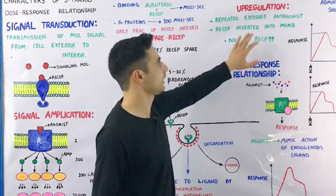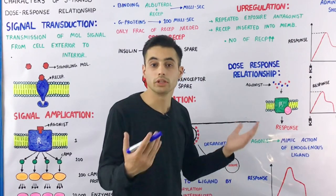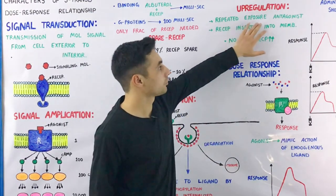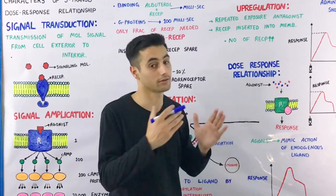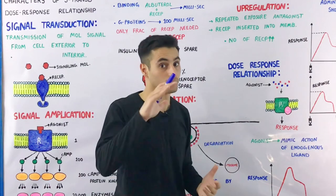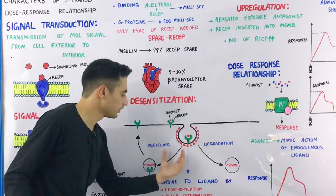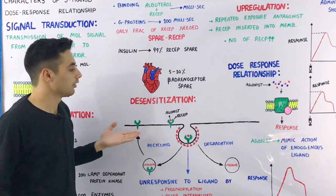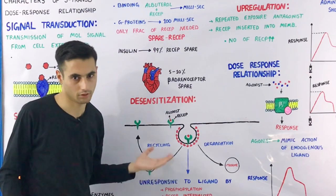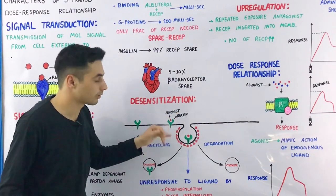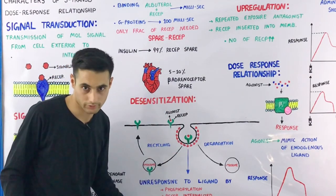Opposite to desensitization, we have the up-regulation phenomenon. Up-regulation means the response of the receptor is increased because receptors are being restored. Remember two terms: agonist, which activates the receptor, and antagonist, which deactivates the receptor. If we repeatedly expose the receptor to an agonist, the receptors are recycled back to the surface, increasing the sensitivity of the cell. For an antagonist, when receptors are restored via the endosome, the drug becomes resistant.